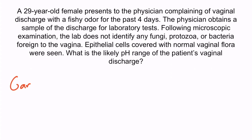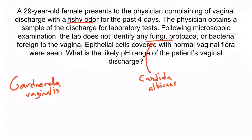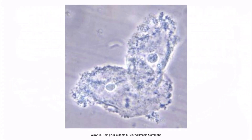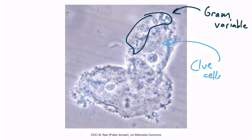Hopefully you've noticed that this describes Gardnerella vaginalis. We are told there is a fishy-smelling vaginal discharge. There is no evidence of fungi, so we're not thinking candida, and there's no protozoa, so we're not thinking trichomonas. There's no bacteria foreign to the vagina; however, there are epithelial cells covered with normal vaginal flora, and Gardnerella vaginalis is normal vaginal flora. These epithelial cells are a dead giveaway for clue cells — recall that clue cells are simply epithelial cells covered with gram-variable rods, which are part of the normal vaginal flora, and it's these rods that cause the stippling appearance.